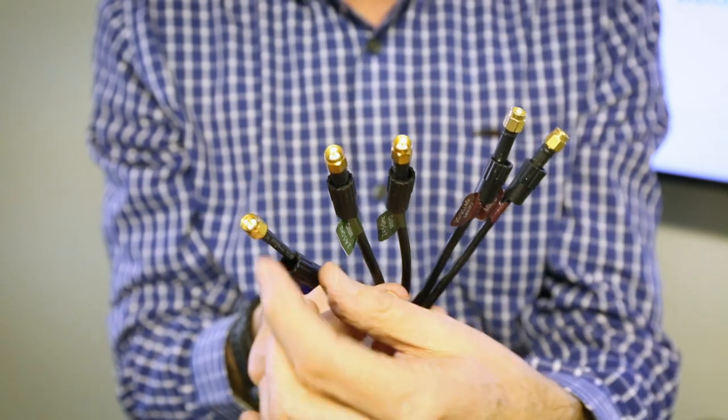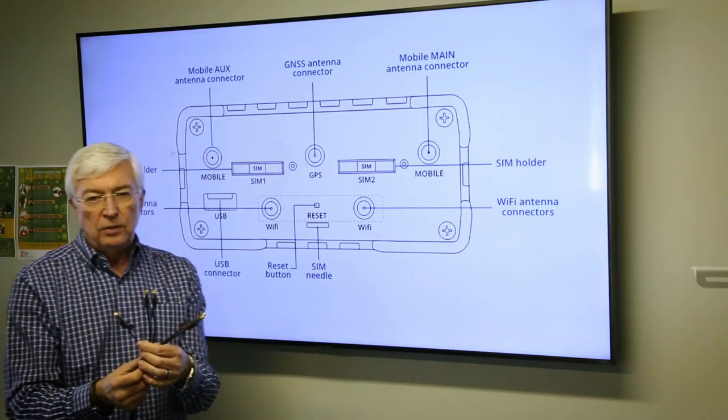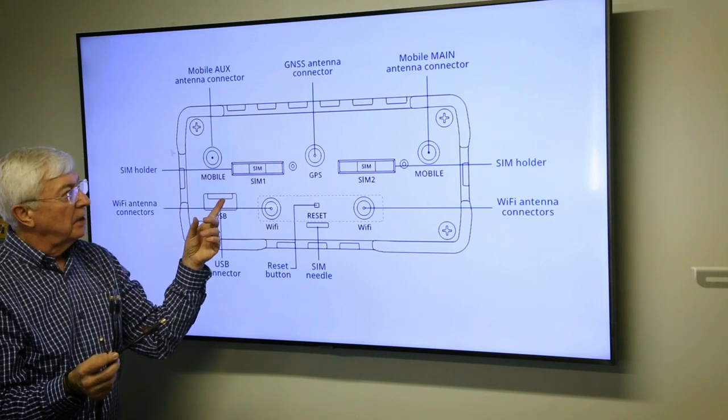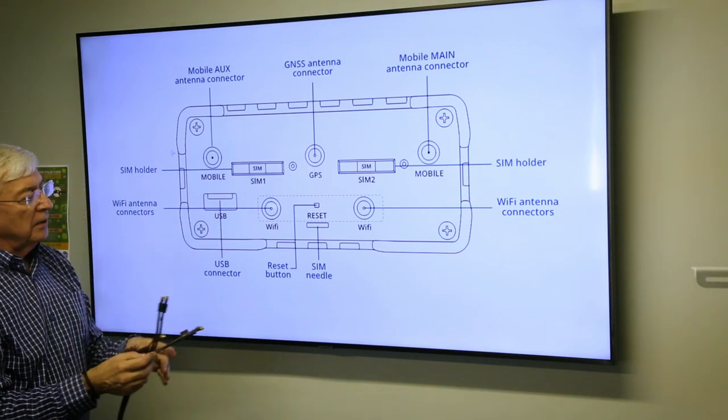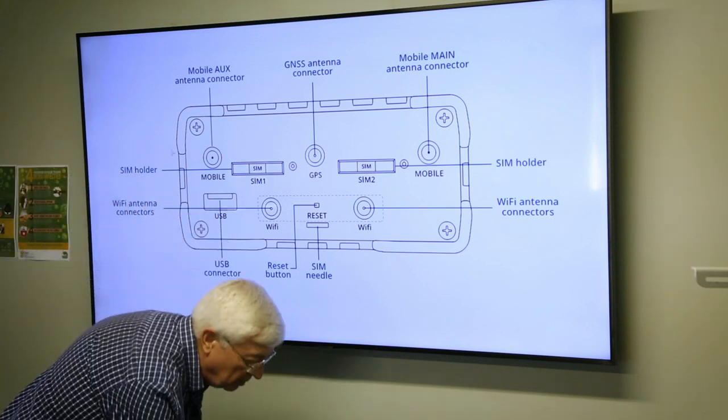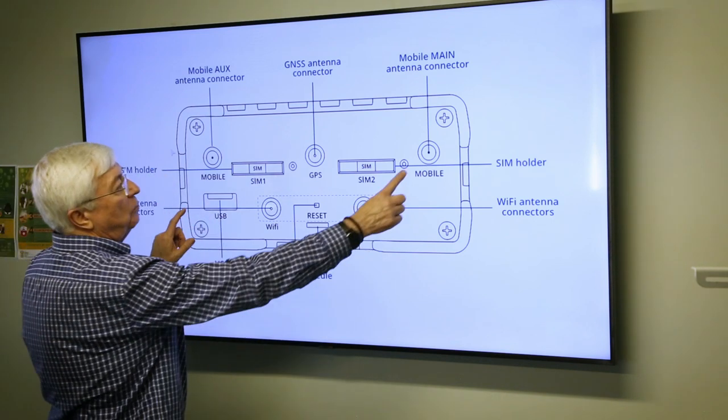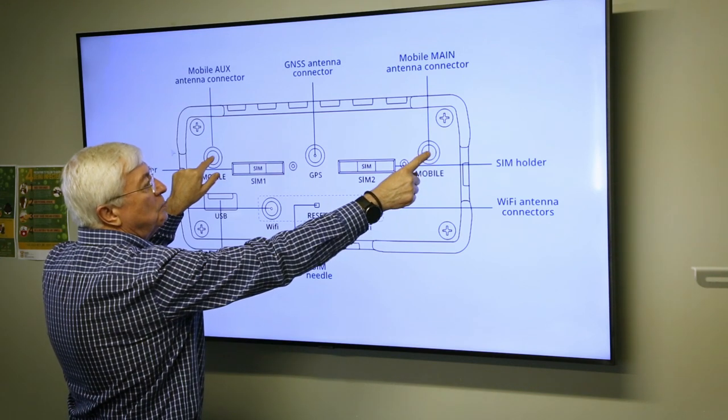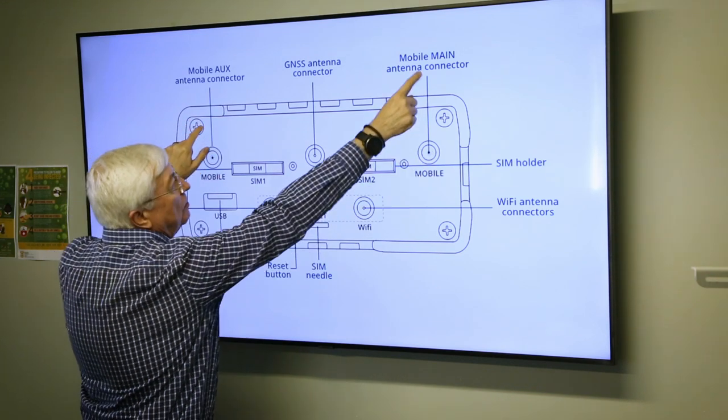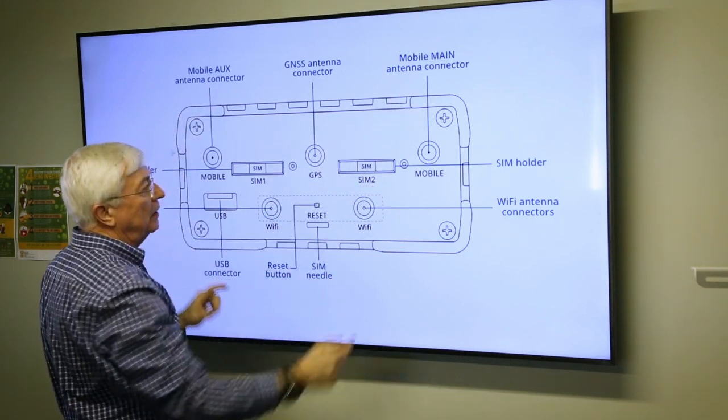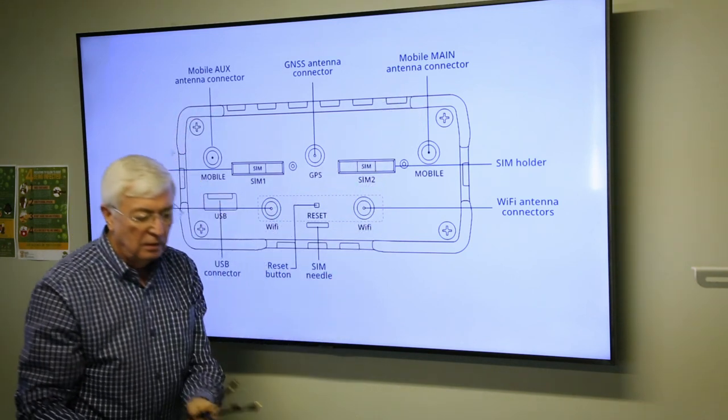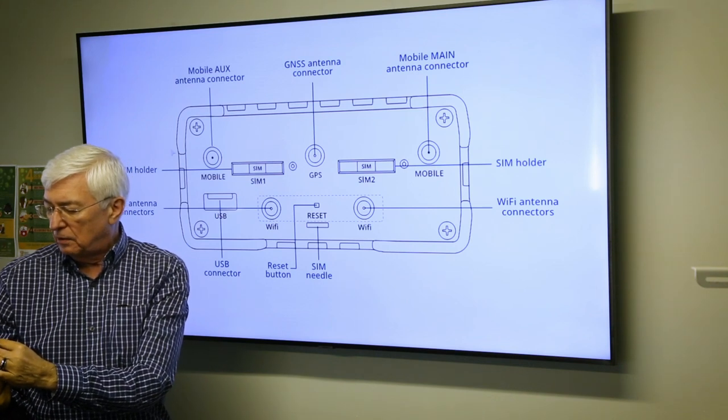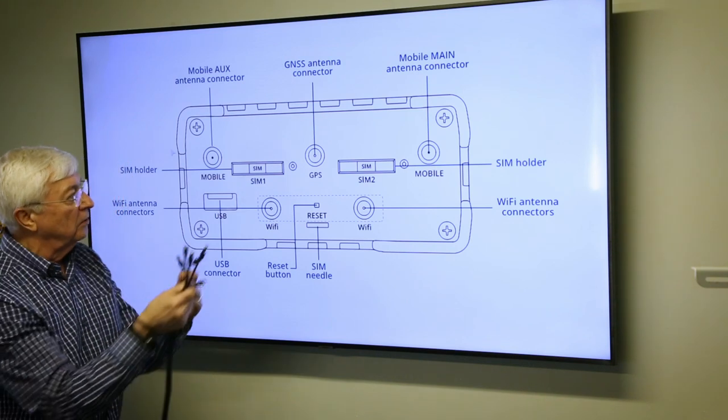We're using the RET Keltonica RET 955 as an example. Now you'll see, I'll just put this down like such, you'll see that we have mobile connectors marked as mobile main and mobile auxiliary. This is where your two cables marked 2G 3G 4G are going to go.